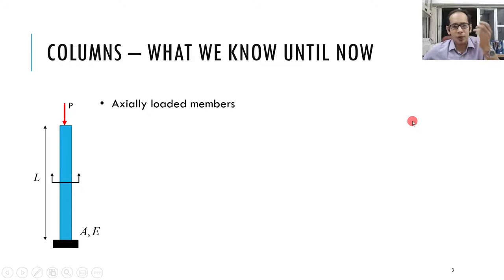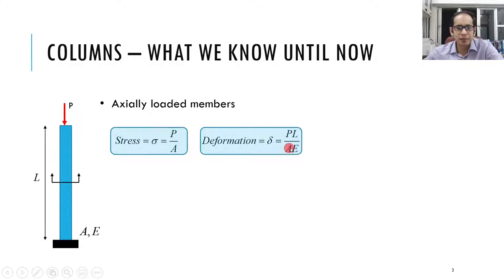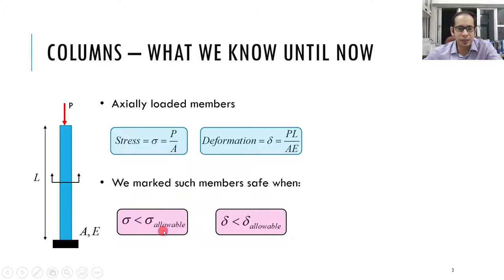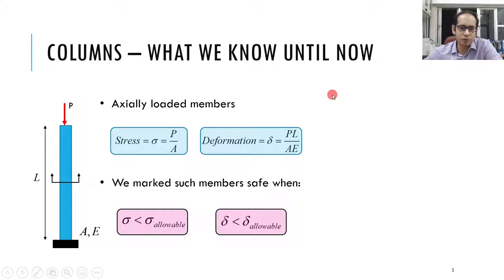We have studied axially loaded members: applying load P, we know sigma equals P over A and delta equals PL over AE. We assessed safety using sigma less than sigma-allowable and delta less than an allowable deflection. But what we have not accounted for is the buckling of columns — a kind of instability phenomenon — which we are now going to study.